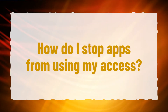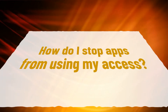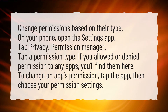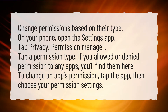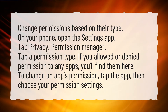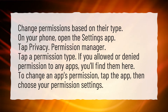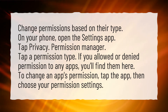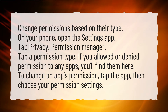How do I stop apps from using my access? Change permissions based on their type. On your phone, open the Settings app. Tap Privacy, then Permission Manager, then tap a permission type. If you allowed or denied permission to any apps, you'll find them here. To change an app's permission, tap the app, then choose your permission settings.